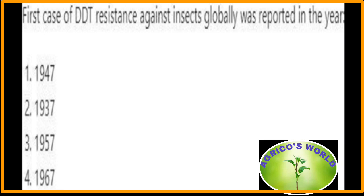The first case of DDT — dichlorodiphenyltrichloroethane — resistance against insects globally was reported in the year 1947.